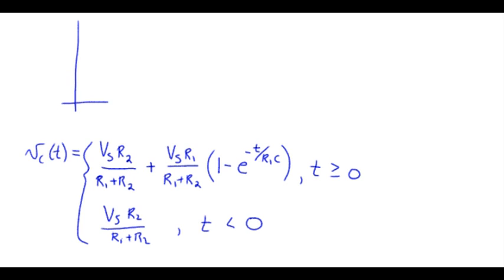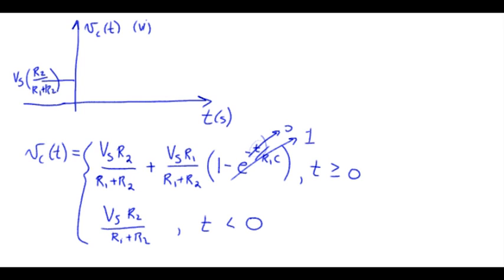So next we'll make a plot of this function. Vc of t in volts, and then time in seconds right there. So we start out with, we'll assume that Vs is a positive number for this graph. So we've got Vs scaled by this voltage divider fraction. That's our starting point. And to see where we end up, let's do the case where t equals zero. If this is zero, then it means the whole chunk here goes to one. So we've got one minus one equals zero. That wipes out this part. And so we're left with Vs times R2 over R1 plus R2. So that makes sense because the capacitor voltage is not supposed to change instantaneously.